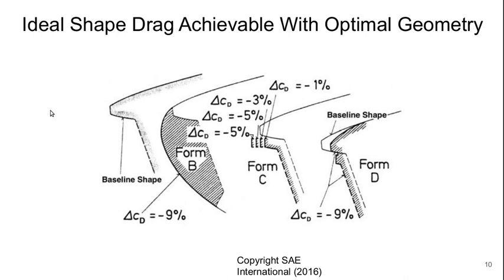That was just a few things that were tried. It turns out you can actually get back to that ideal shape drag if you optimize the geometry. Here's again a baseline shape, and here's that ideal geometry, called Form B here, which reduces drag by 9%.